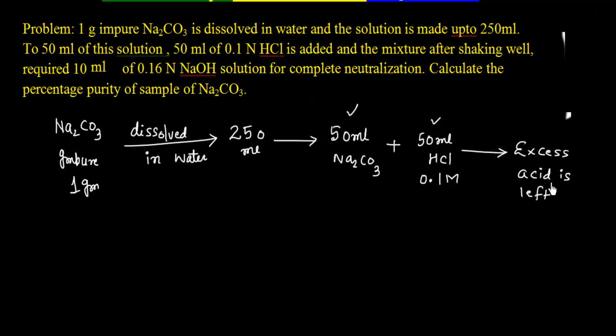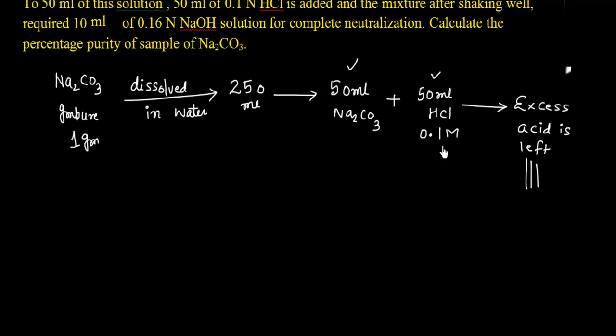Now this excess acid is neutralized by 10 ml of 0.16 N NaOH, so 0.16 M. We can calculate moles of NaOH. This is same as moles of acid that is in excess. And we know the moles of initial HCl. So if we subtract, we can get the moles of HCl used.